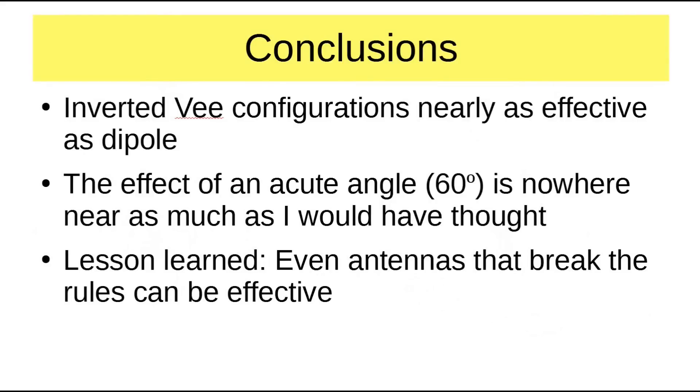So what are the conclusions of the study? The inverted V configurations are nearly as effective as a dipole. When you get really wild, you lose up to 2 dB. The effect of an acute angle is nowhere near as much as I thought, or I would have thought. I would have thought that it would have been a terrible antenna. It is 2 dB down. So it is a compromised antenna. But the lesson learned here is that even antennas that break the rules can be effective.